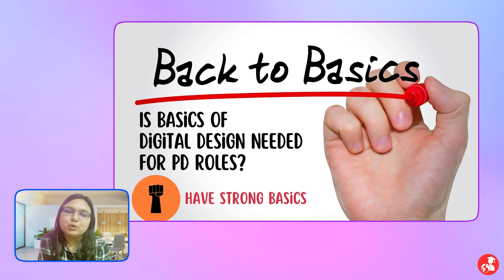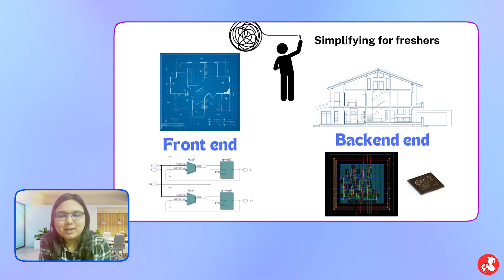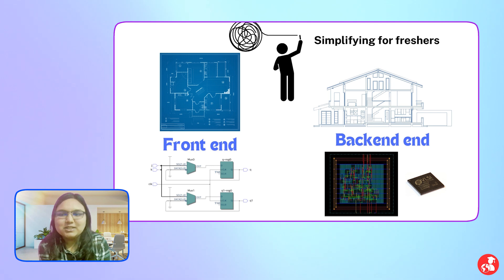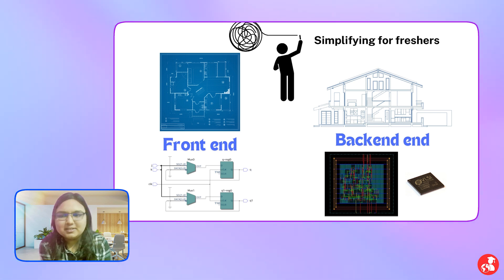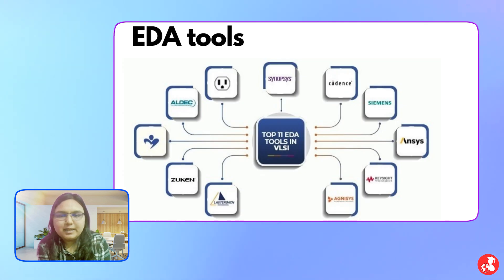Regarding how to prepare, let me give a practical scenario. If you need to build a building, there are two stages: first, you draw the map, define where the electrical connections and pipelines will be—everything prepared on paper. Then comes the actual stage where you physically construct the building. Similarly, front-end is everything done on the map, and layout—physical design—is actually building in a physical environment.